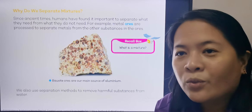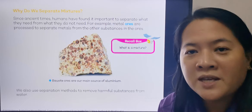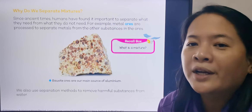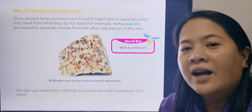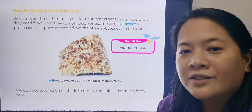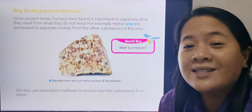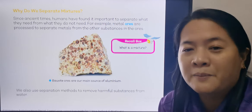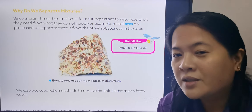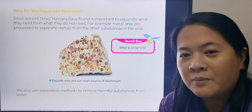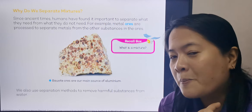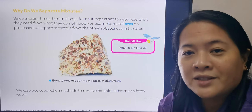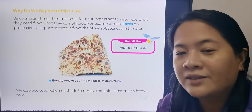Our first lesson is why do we separate mixtures. But before we move on to that, I want you to understand what is the difference between a pure substance and a mixture. When you say pure substance, there's only one substance, one element, or a compound in it.